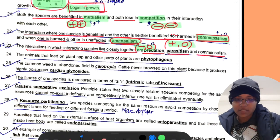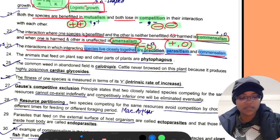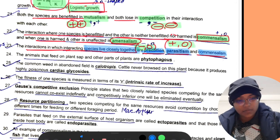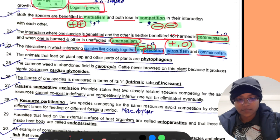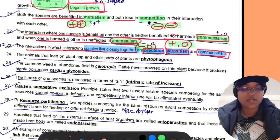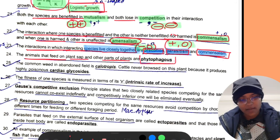The interactions in which interacting species live closely together are called predation, parasitism and commensalism. You have to learn this because they will ask the question.